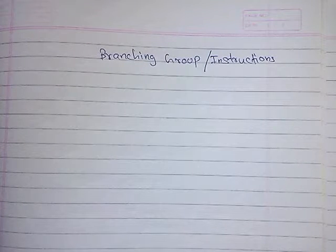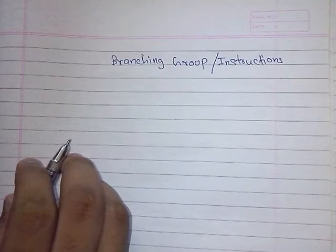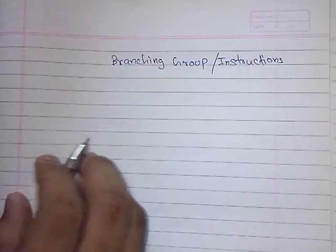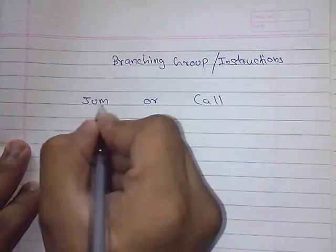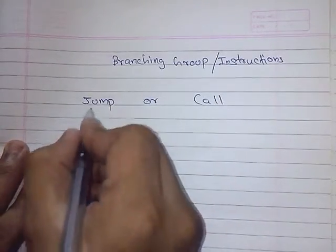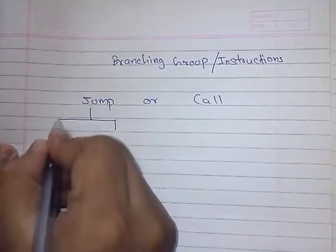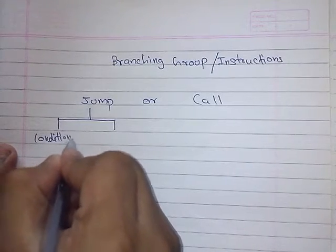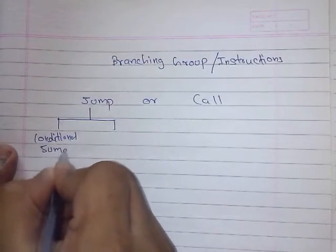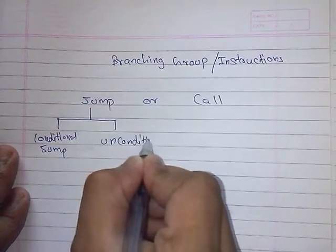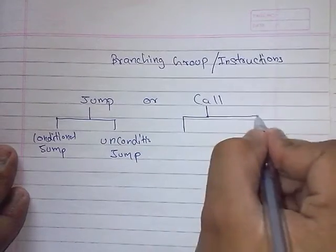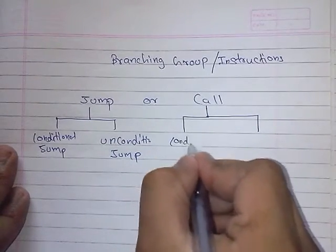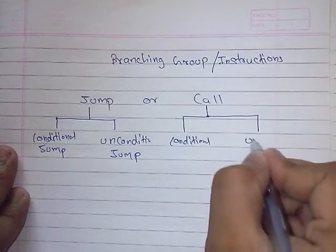Hello, in this video we will see branching group of instructions. Branching instructions can be of two types: jump instruction or call instruction. These are further divided into conditional jump and unconditional jump. Call is also further divided into conditional and unconditional.